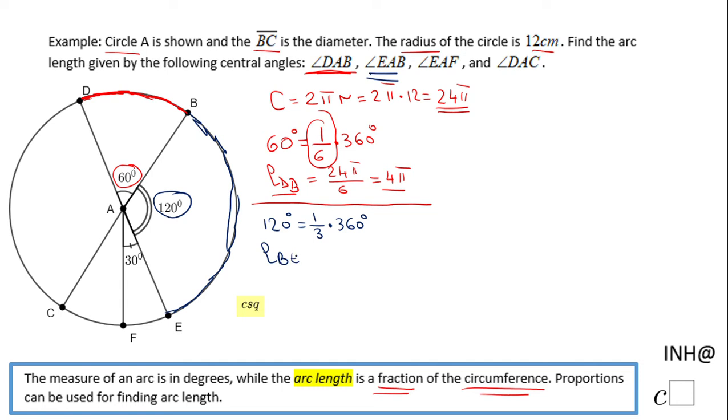BE, which goes with that central angle EAB, will be 24π—the same circumference—divided by 3. So that will be 8π.